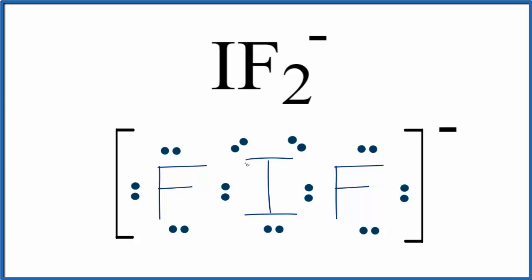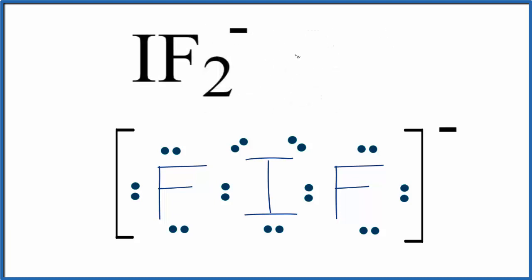So we can use the AXE notation to determine the molecular geometry here for IF2-. A, that's the central atom. We're talking about the iodine atom here. When we look at molecular geometry, we're looking at that with respect to that central iodine atom.